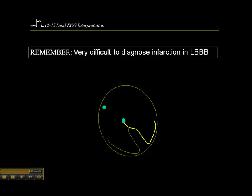If you suspect a new onset left bundle branch block, then in order to have an acute LBBB secondary to an acute myocardial infarction, the patient probably has a proximal occlusion of their LAD and/or their left main coronary artery. In that case, they're probably going to be quite sick — if not hypotensive and in failure with pulmonary edema. Something to consider when suspecting acute MI in the presence of a left bundle branch block.